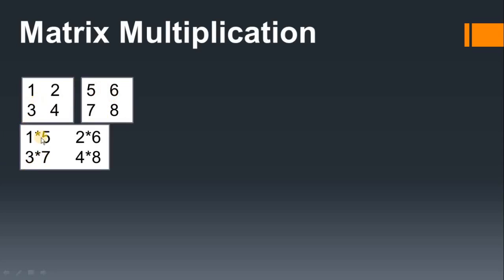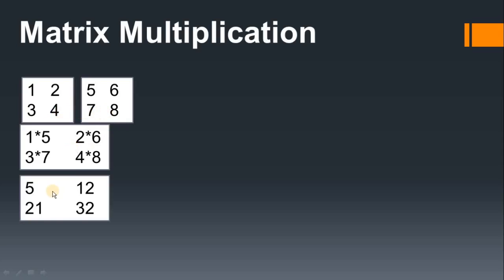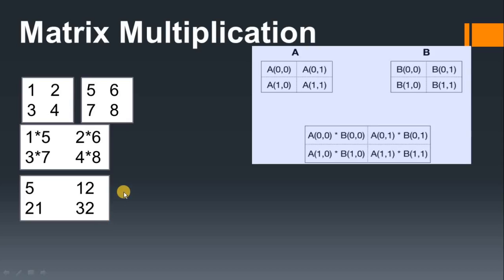There are two kinds of multiplication. The first is simple element-wise multiplication: 1 multiplied by 5, then the second value multiplied by the corresponding second value. In the second row, 3 is multiplied by 7 and 4 is multiplied by 8. So you get answers like 5, 12, 21, and 32. This is the index position of the matrix.